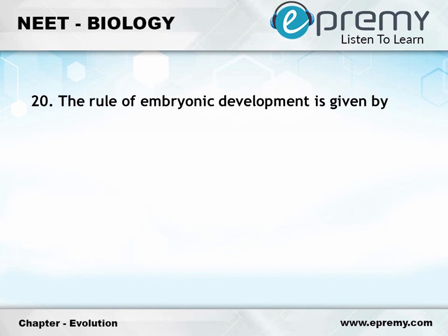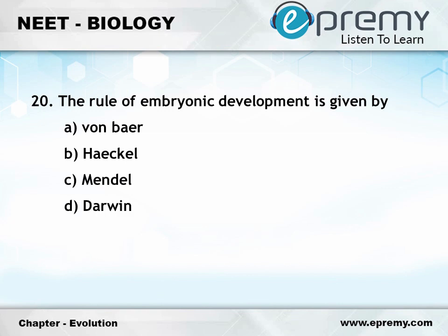Question number 20: The rule of embryonic development is given by. Option A: Von Baer. Option B: Haeckel. Option C: Mendel. Option D: Darwin. And the answer is Option A: Von Baer. This is brought to you by ePremie.com.